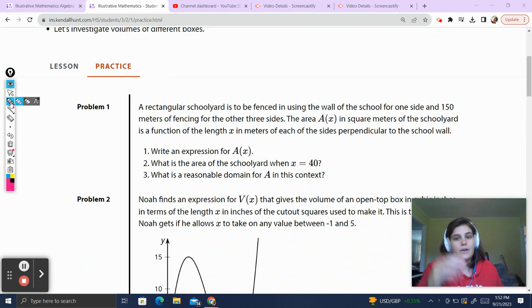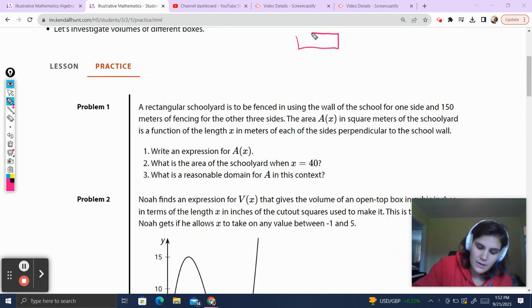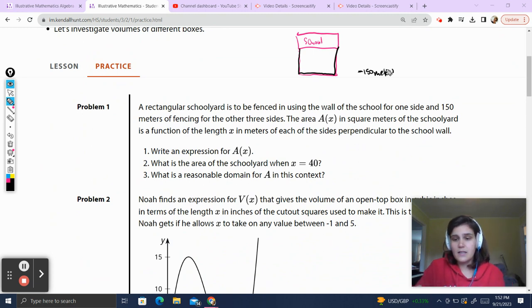Problem 1. A rectangular schoolyard is to be fenced in using a wall of the school for one side and 150 meters of fencing for the other three sides. So this over here, we're looking from above. This is going to represent our school. And we're going to use a fence to fence in three sides. The fence is going to be these three sides. And the amount of fencing that we have is going to equal 150 meters.